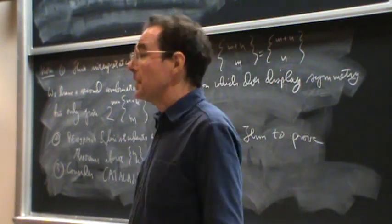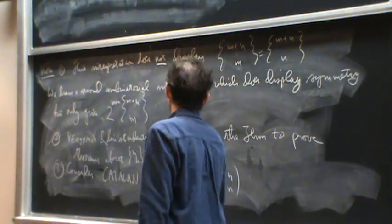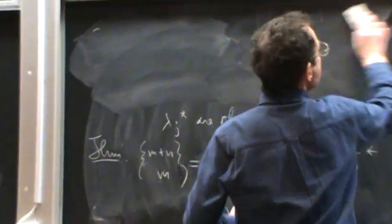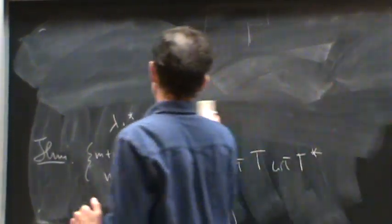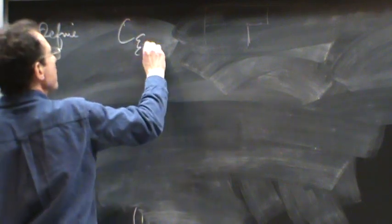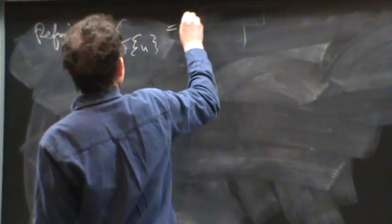Remember that the Catalan number is defined by 1 over n plus 1 times the central binomial coefficient. And they'll play exactly the same game. Right? Define. Define an ST analog, say C sub curly brackets n, by putting curly brackets around everything in size. Right?